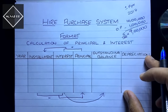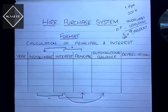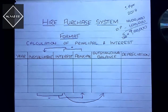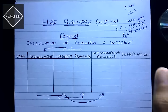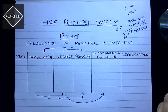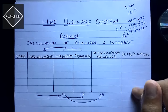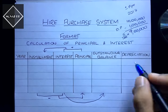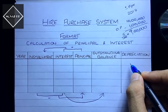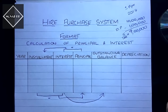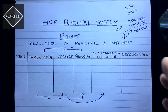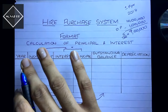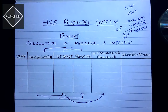The last column is depreciation. To calculate depreciation, you take the cash price and depending on the question - whether it is straight line method or reducing balance method - you charge depreciation accordingly. For example, on 10 lakh at 10% straight line method, you charge 1 lakh every year. This is how you prepare the working note to calculate interest and principal amount.